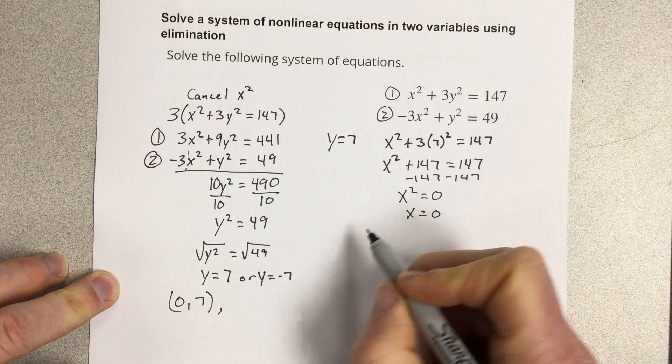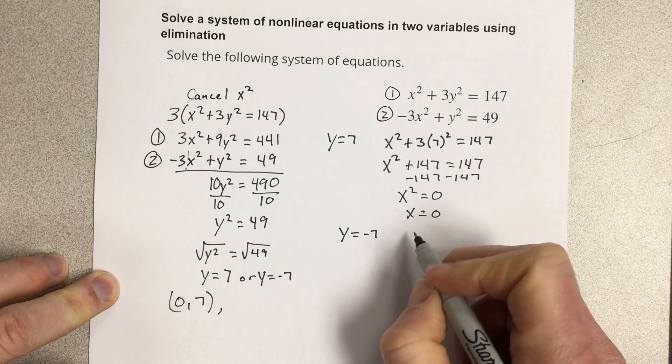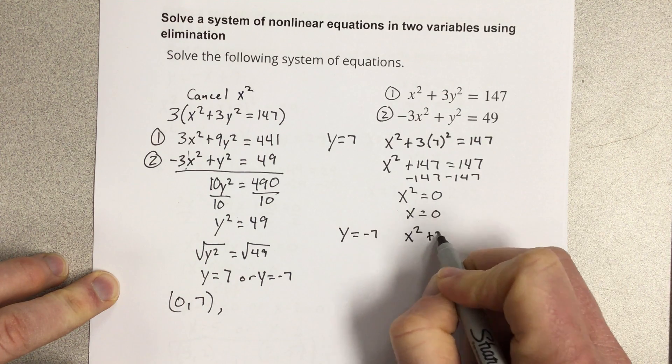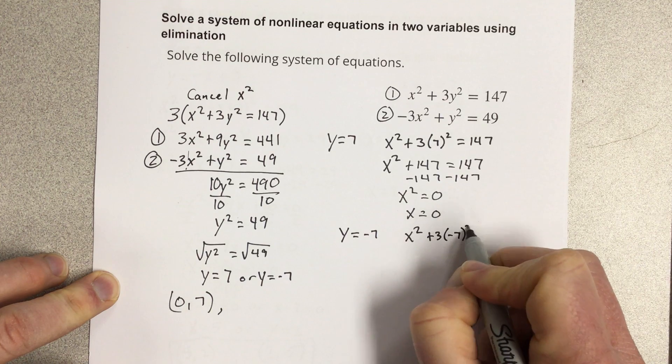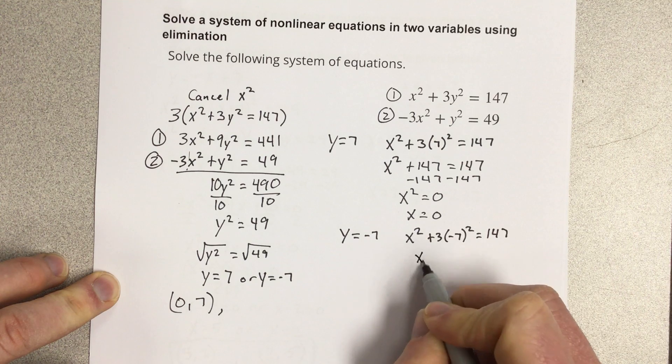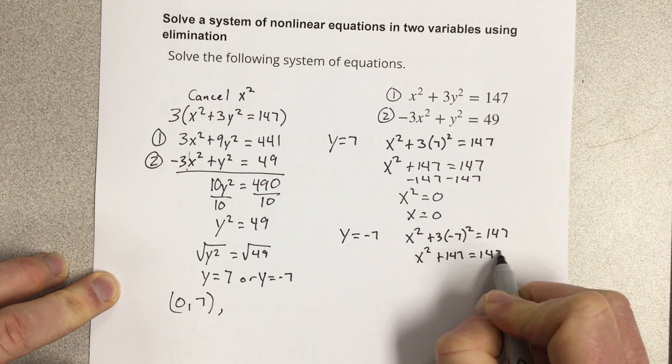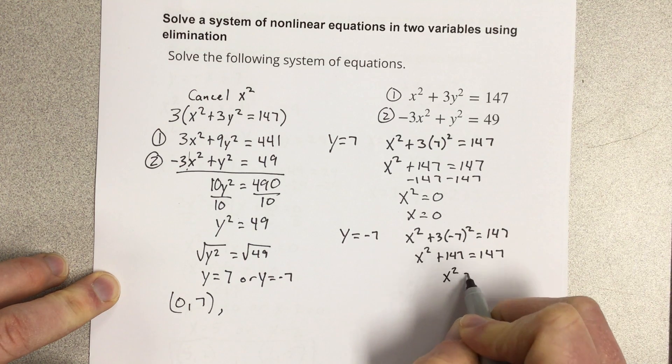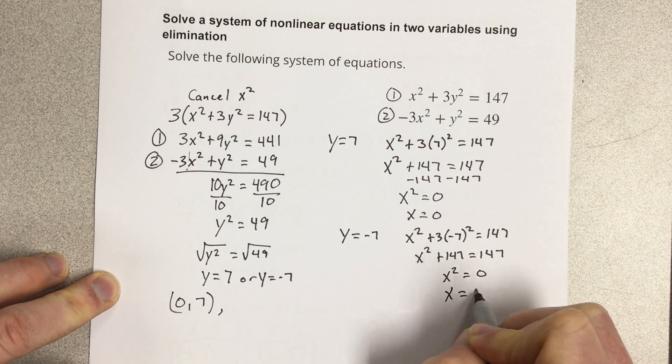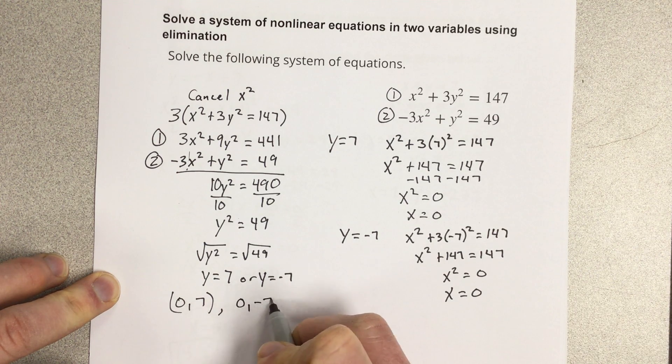To find the other solution, I'm going to do the same thing but with negative 7. So that's x² plus 3 times negative 7² equals 147. That's going to be x² plus 147 equals 147. If I subtract that, I get x² equals 0 or x equals 0 again. So 0 comma negative 7.